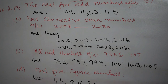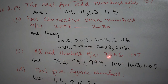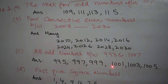Dear students, proceed to question number 2, part number C. All odd numbers between 993 and 1007. You notice that we have to write between 993 and 1007. These two numbers are not included in our answer. So we have to write 995, 997, 999, 1001, 1003 and 1005.